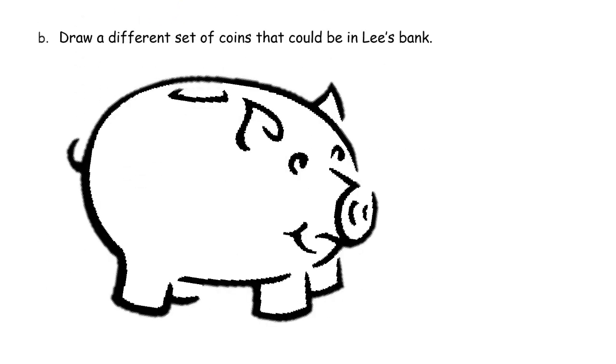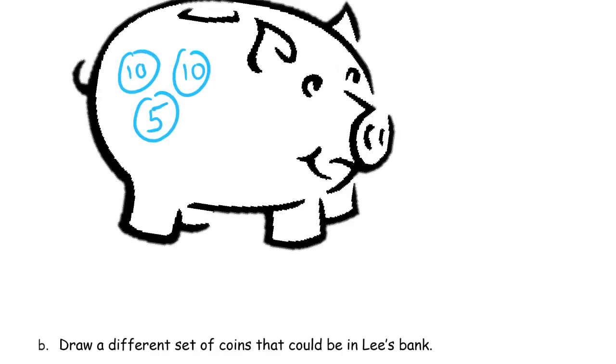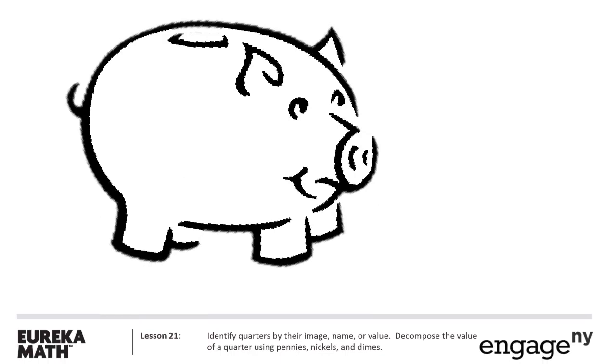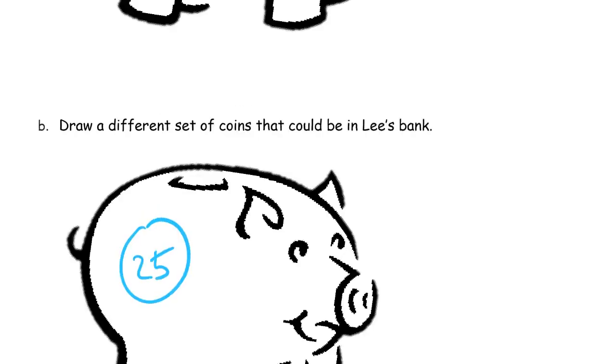Now draw a different set of coins that could be in Lee's bank. So we need just another way to draw 25 cents. I'm going to write one quarter here. It's not going to sound like there's a lot of coins in there because it'll just be one, but it's the same amount of money.